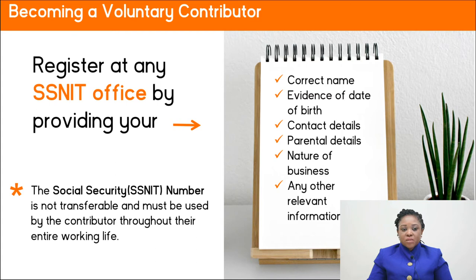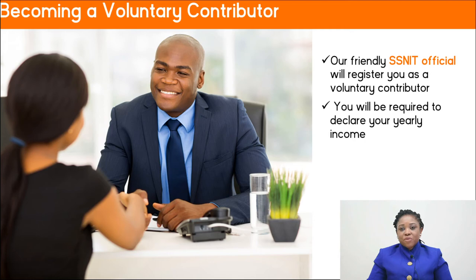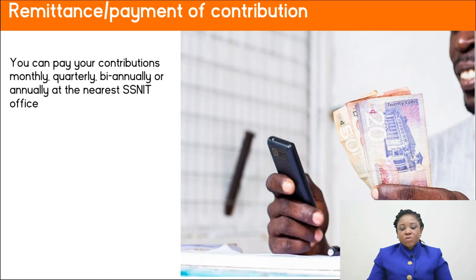After you have successfully registered for a social security number, you will be required to declare your yearly income. How do you contribute to SNIT after being registered as a voluntary contributor? You can pay your contributions monthly, quarterly, bi-annually, or annually at the nearest SNIT office. Payment under voluntary contributions is quite flexible, and we want to assure you that even when you make late payments within the year, you are not charged any penalties.